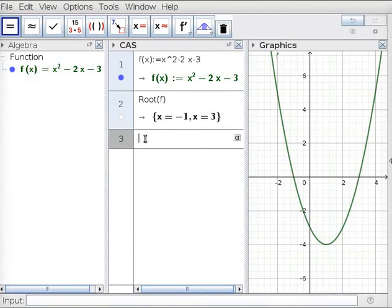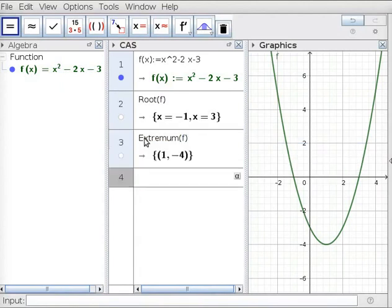In line 3 of CAS view, type extremum(f). Press Enter. The extremum appears below in the same box in curly brackets. Note that this is the minimum vertex of parabola f in graphics view.